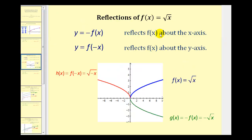So to summarize: if y equals negative f of x, we have a reflection about the x-axis, which we have here in green, where g of x equals negative f of x, which is equal to negative square root of x. And if y is equal to f of negative x, this reflects the function across the y-axis, which we have here in red — h of x equals f of negative x, equal to the square root of negative x. So here the effect is changing the sign of the x-coordinates of the parent function, and here the effect is changing the sign of the y-coordinates.